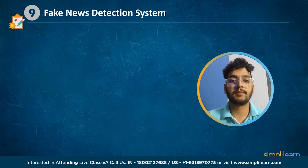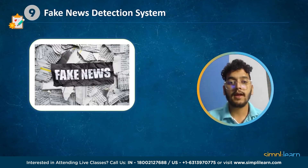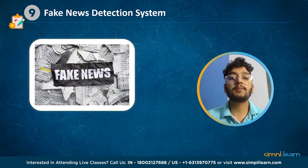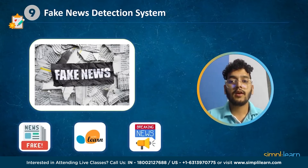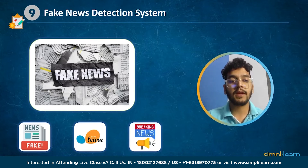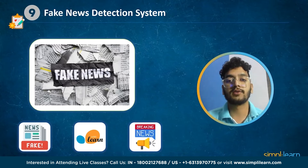At number 9 we have fake news detection system. Do you believe everything you read on social media? Not all news is true. ML is the answer to recognizing fake news. You will be able to tell the difference between real and fake news by practicing this project. On our dataset we create a TF-IDF vectorizer with scikit-learn. The model is then fitted using a passive-aggressive classifier. Finally, the accuracy score and the confusion matrix indicate how well our model performs. The link for the project is in the description box below.